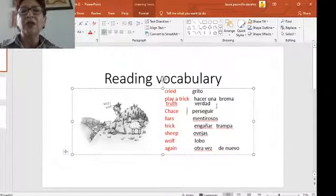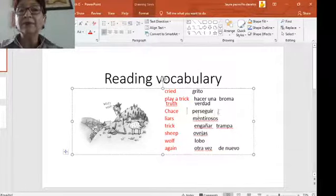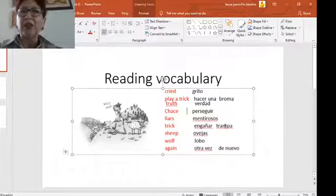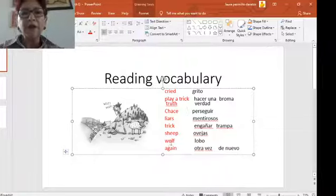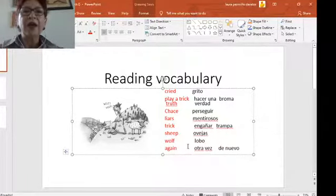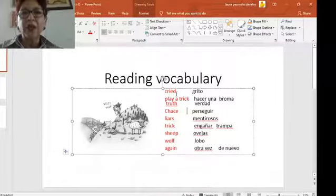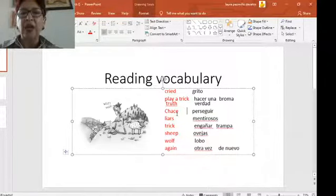Chase is perseguir. Liars - mentirosos. A trick is engañar o hacer trampa. Sometimes I tell you, this question is tricky - it's medio tramposita. Sheep - ovejas. Wolf - lobo. Again - otra vez, de nuevo. So before you start reading, please read this first. Familiarize yourself with the words that you will have in this reading.